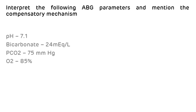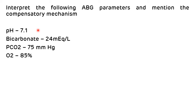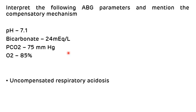Case study 3b: pH is 7.1 — reduced, so it is acidosis. Bicarbonate is 24 mEq/L — normal. PCO2 is 75 mmHg — increased. pH is reduced and PCO2 is increased, so this is respiratory acidosis. It is uncompensated because bicarbonate values are normal. In respiratory acidosis, compensation should be increased renal bicarbonate reabsorption, but here bicarbonate is normal, confirming uncompensated respiratory acidosis.